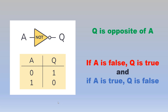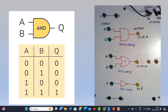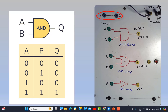Now let us perform an experiment which will show you how these logic gates function. Here is a board which has all three basic logic gates — the AND gate, the OR gate and the NOT gate. To operate these gates you require some power supply, which is applied here. This is logic level 1 for the input and this is logic level 0 for the output.